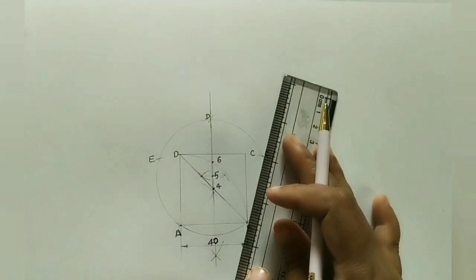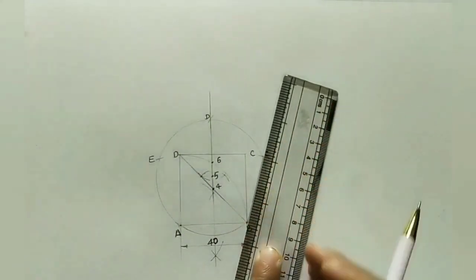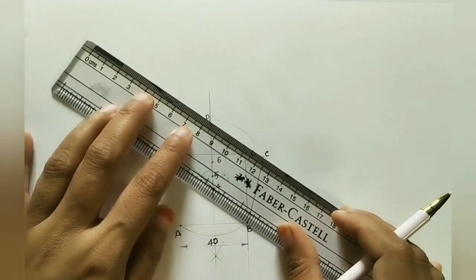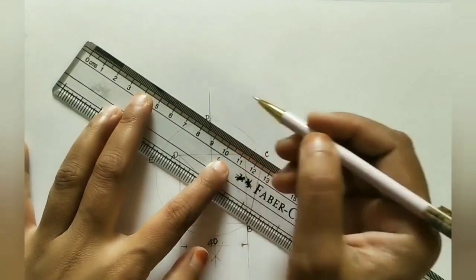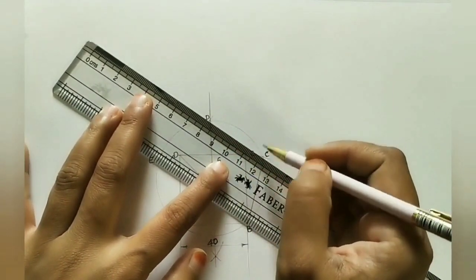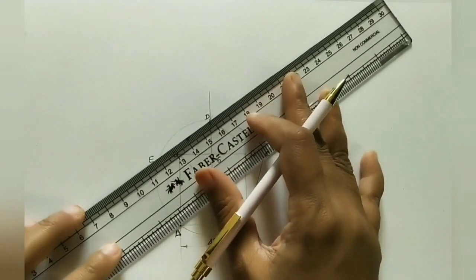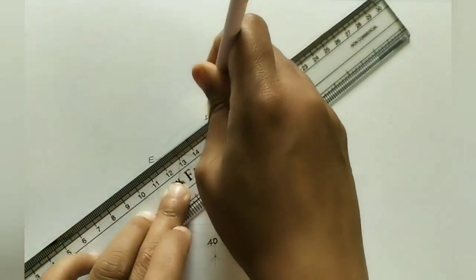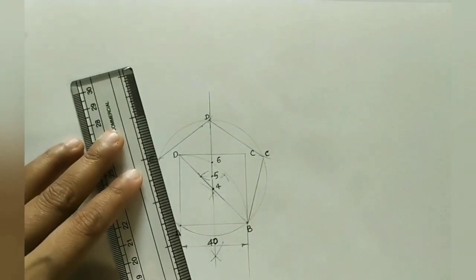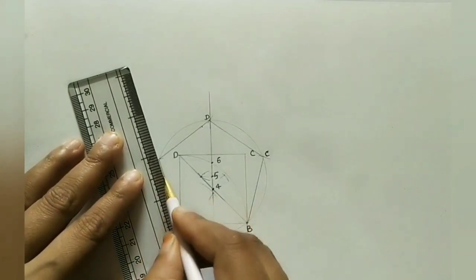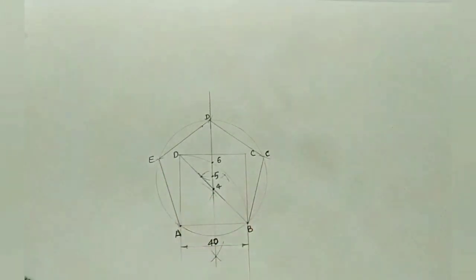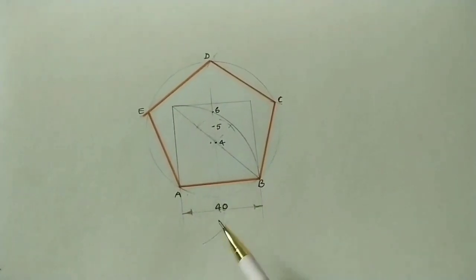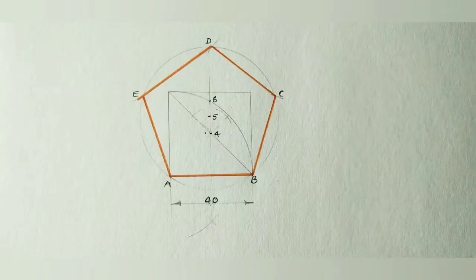Mark the intersection points C, D, and E. Join all points A, B, C, D, E and back to A using a scale. Join D-E and join A-E. You will get the pentagon with side 40 mm. This is the general method.